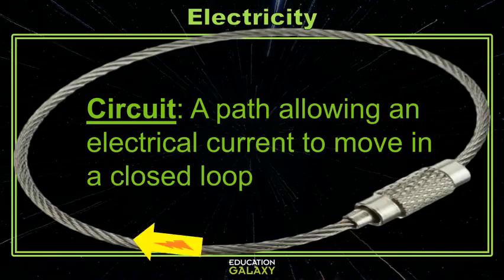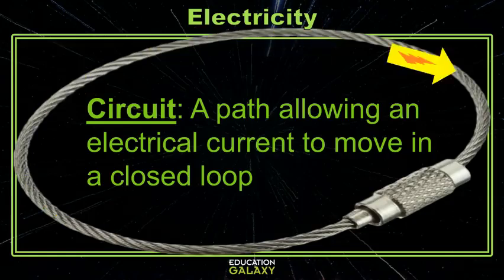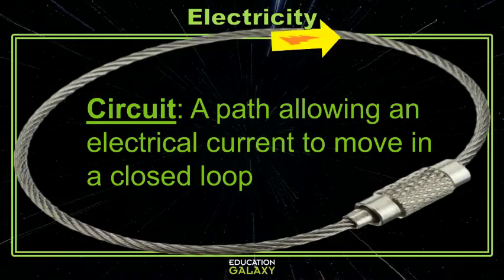To harness electricity, you can use conductors to create a one-way path for the current to flow through. And if you set up your path in a loop, you can make what's called a circuit. A circuit is just a loop of conductors, usually wires, that allows electricity to power a device.